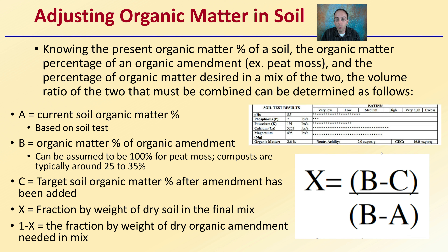The soil test provides you with letter A in the equation. A is the current soil organic matter percentage based on your soil test. B represents the organic matter percentage of the organic amendment — you can assume 100% for peat moss, while compost is typically around 25 to 35%. C is the target soil organic matter percentage after the amendment has been added — we'll use 5% as our target. This calculates X, the fraction by weight of dry soil in the final mix, and 1 minus X, the fraction by weight of dry organic amendment needed.